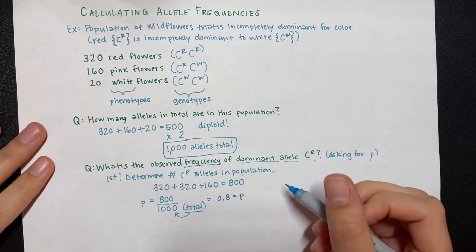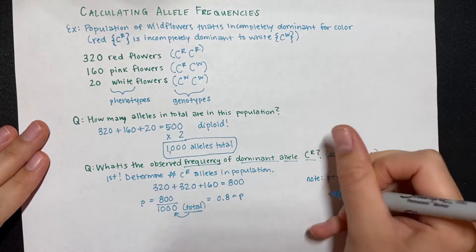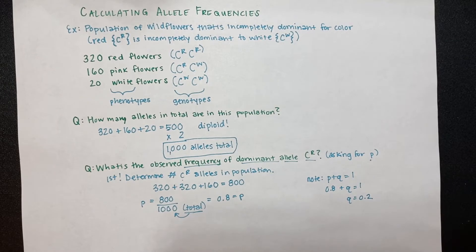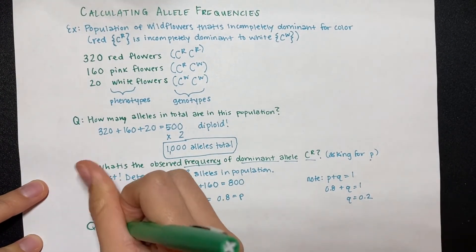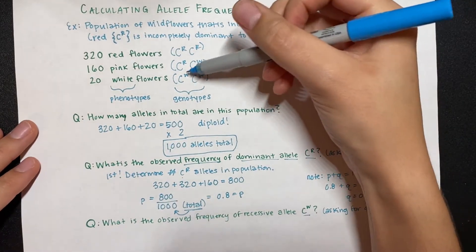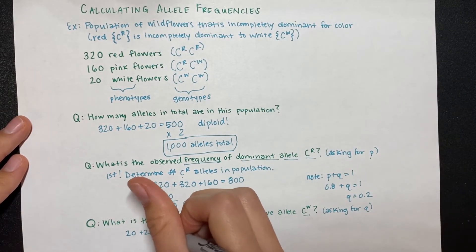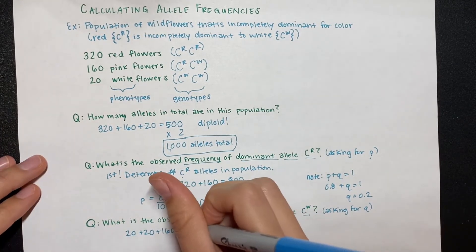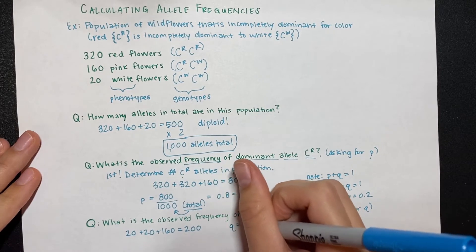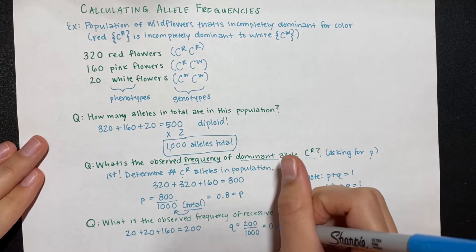By calculating p, you can automatically calculate q. The first Hardy-Weinberg equation is p + q = 1. Plugging in 0.8 for p gives q = 0.2. Let's also verify by counting CW alleles directly: the 20 white flowers have two copies of CW, giving 20 + 20 = 40, and the 160 pink flowers each have one CW allele, adding 160. That's 40 + 160 = 200 CW alleles. Dividing by 1,000 total alleles: 200 ÷ 1,000 = 0.2, confirming q = 0.2.